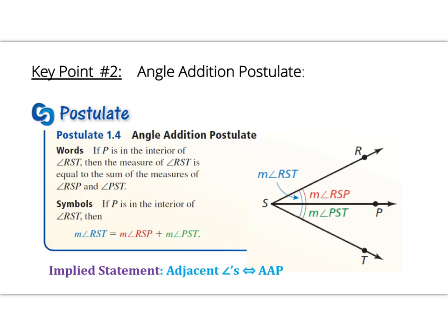That leads us to the angle addition postulate — postulates are statements we accept as truth without proof. This one is similar to the segment addition postulate, except now we're dealing with angles. When you have two adjacent angles, adding them together equals the bigger angle. So adjacent angles implies the angle addition postulate. We can set up an angle addition postulate statement similar to segment addition postulate statements, now dealing with measures of angles.